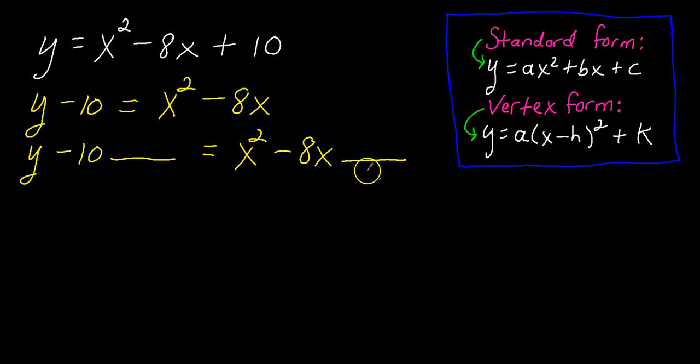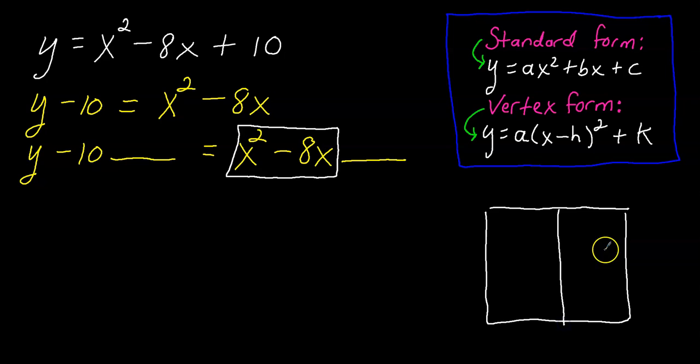Now the next step is to just leave some space. Y minus 10, leave some space, bring down your equal sign, then x squared minus 8x, and I'll leave some space here as well. So I didn't really change anything. I just needed to leave some space. Now the goal here is to complete the square on this piece right here, the x squared minus 8x. And to do that, you're just going to make a box over here. We've done this before. And you're going to section it off into four pieces.